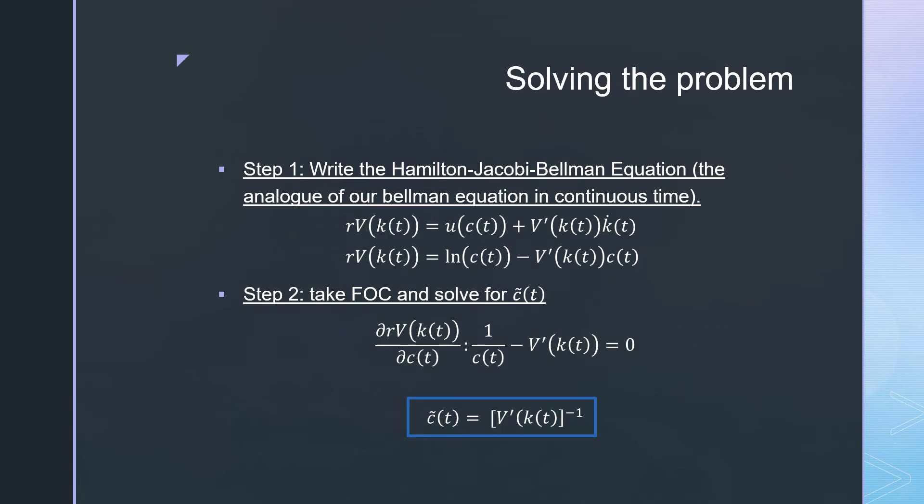Following our steps, we write out our Hamilton-Jacobi-Bellman equation in continuous time. We plug in our instantaneous utility function and our law of motion, which just changes the sign of our variable here.